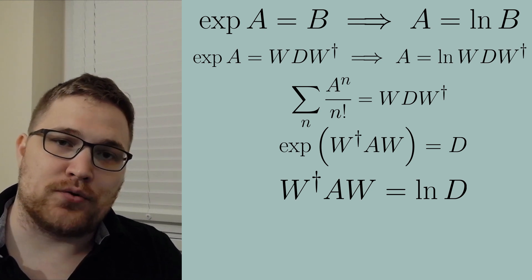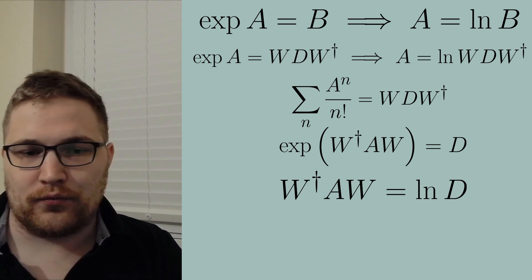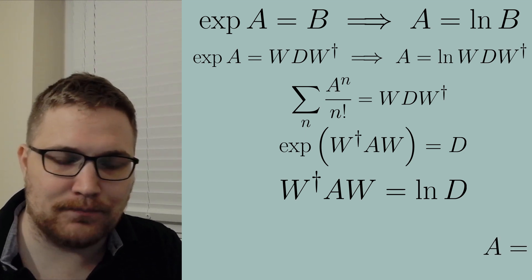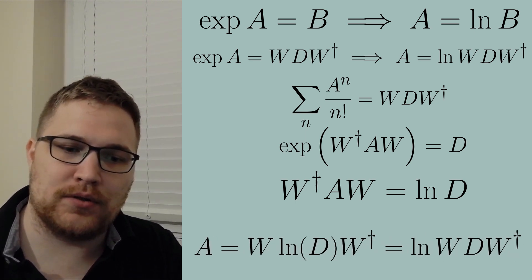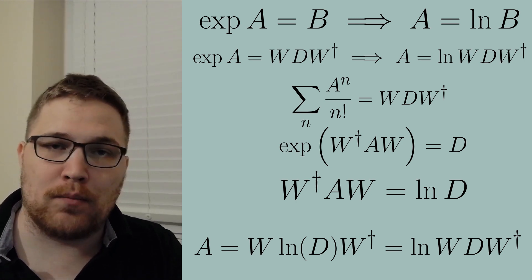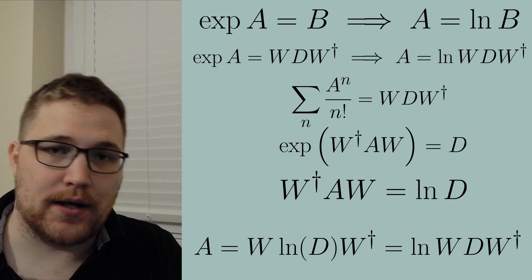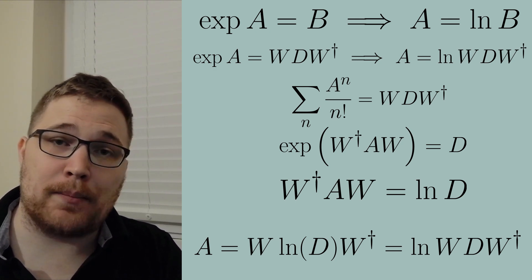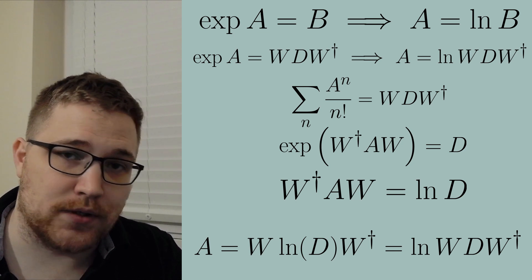Taking the unitary matrices W to the right hand side gets our desired result. We get A is equal to W times the natural logarithm of D times W dagger where both of the W's are outside of the matrix logarithm. So the unitaries can pop right out of the matrix logarithm.